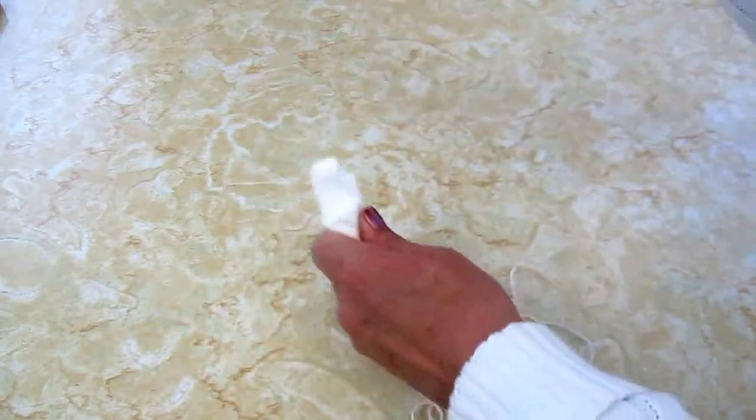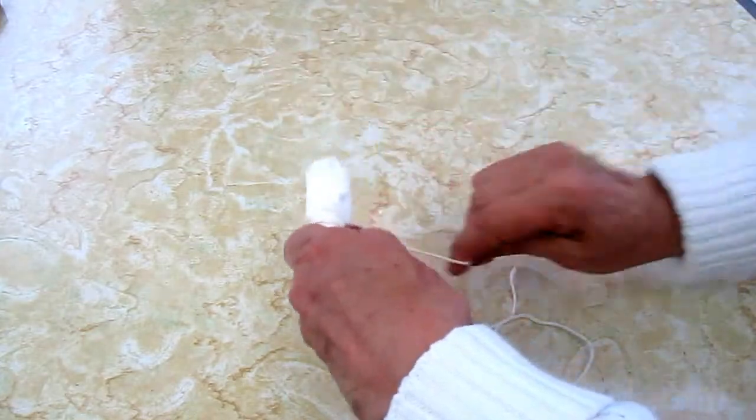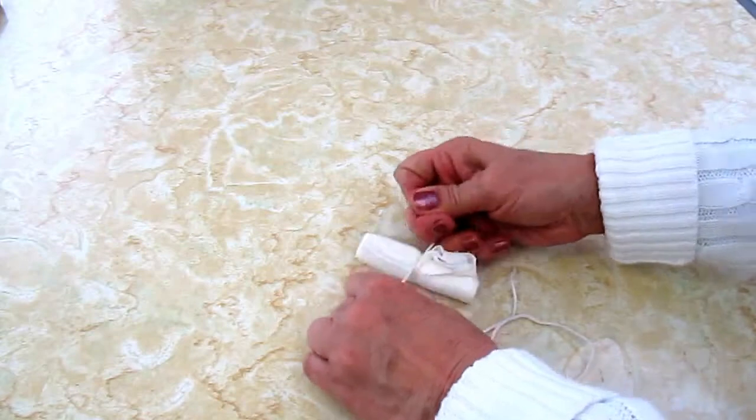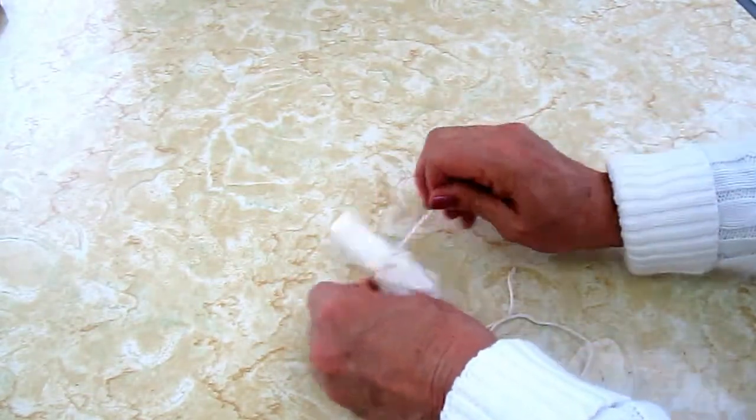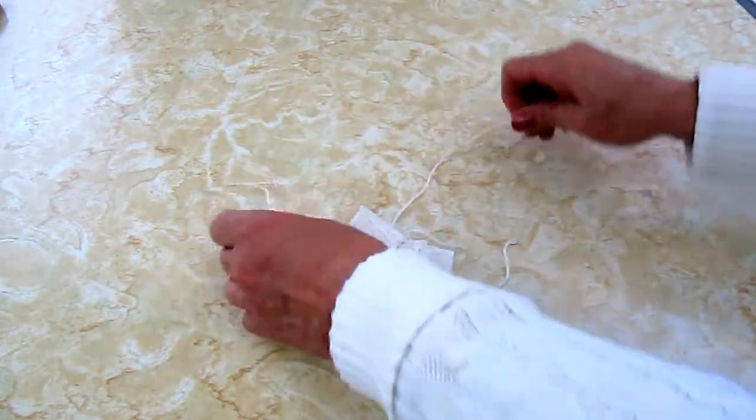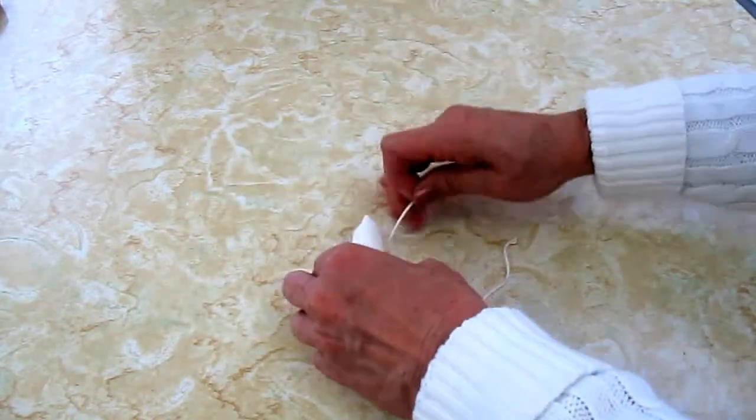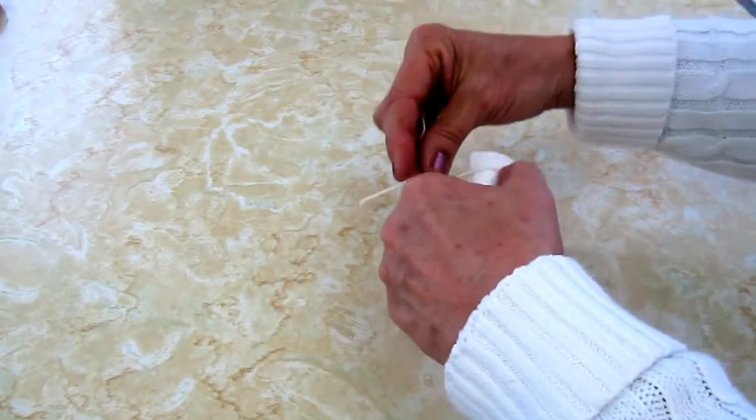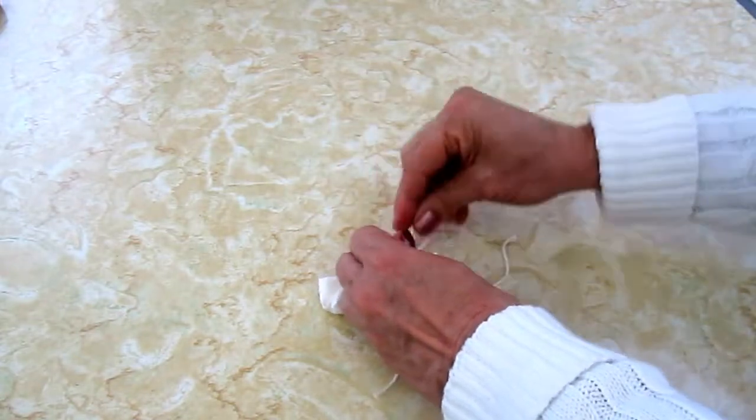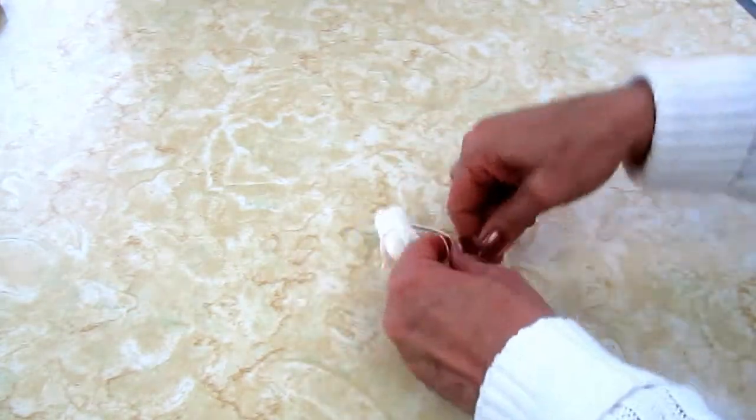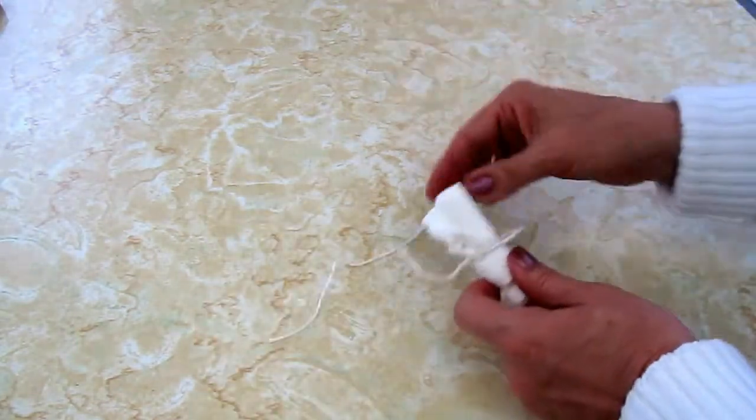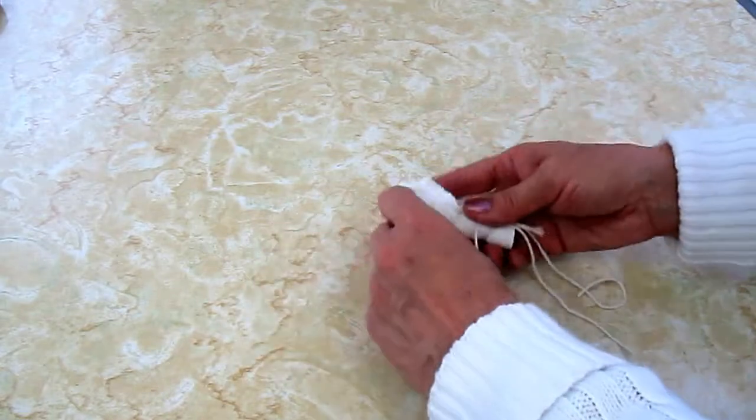I'm going to take a string and wrap it around a couple times and tie a knot. Then I'm going to wrap another string around on this end, tie it tight in a knot. And I'm going to take a third string and tie it on the other end.